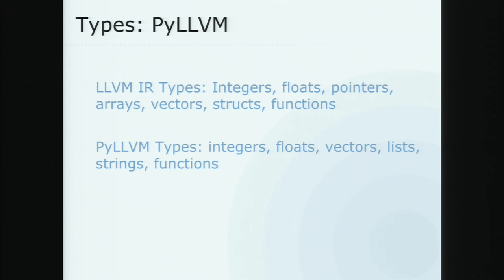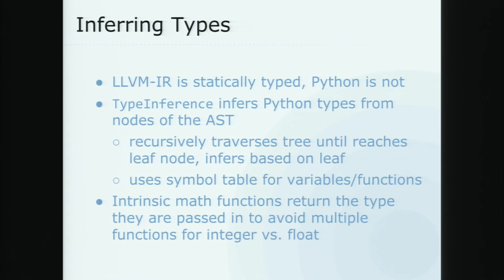LLVM IR provides numerical types as well as five derived types. I'm going to talk about how I represented the various Python types as LLVM IR types. Since LLVM IR is a statically typed representation and Python is not, it is necessary to be able to infer the types of expressions before we actually evaluate them. To do this, we used the infer_type function, which was partially implemented before I started contributing. Given a node on the AST, you recursively descend it until you find something that tells you what the type of the expression will be — say a leaf node that's a constant, a variable you look up in the symbol table, or a function call you check against intrinsic functions.